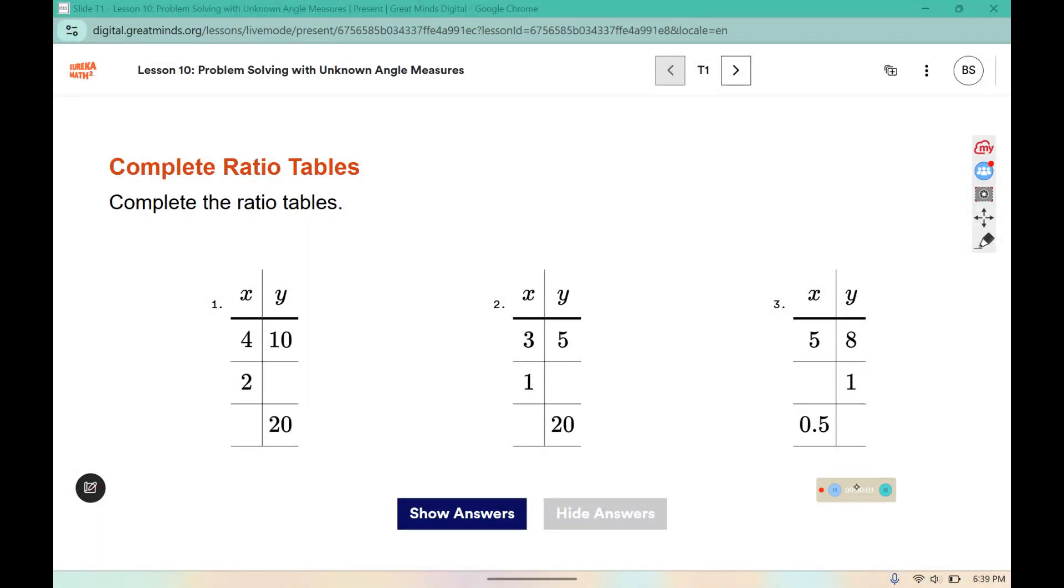For this warm-up, you're completing the ratio table, so you're looking for a pattern. For example, 8 divided by 8 would give you 1. So 5 divided by 8 is 5 eighths, or you can write it as a decimal.